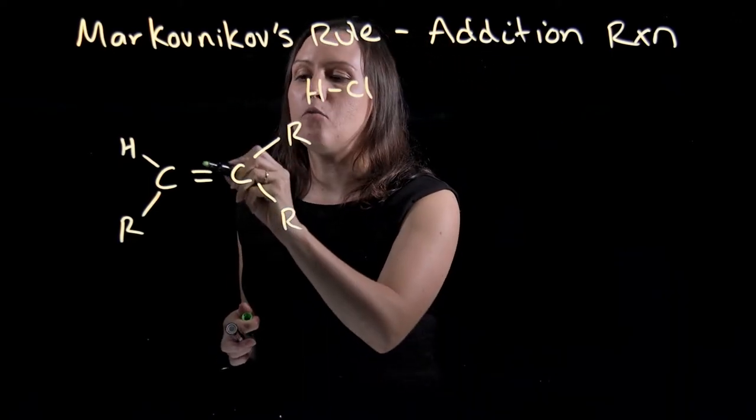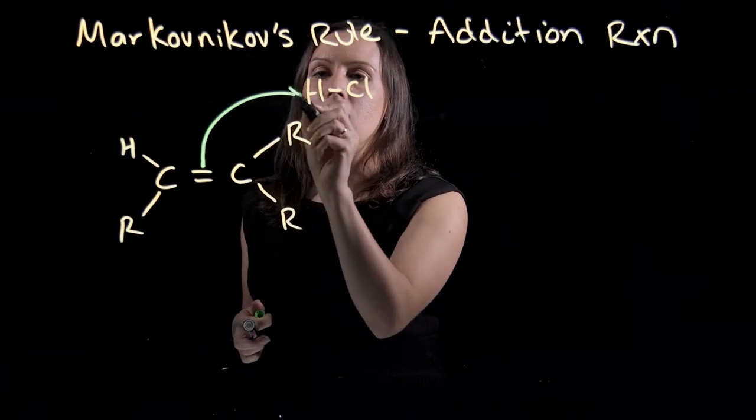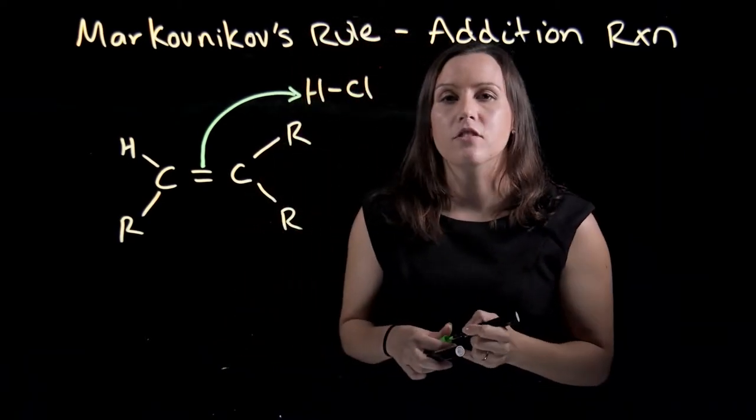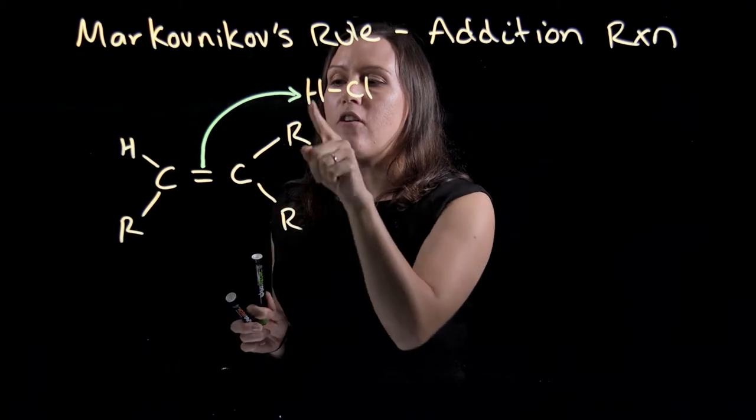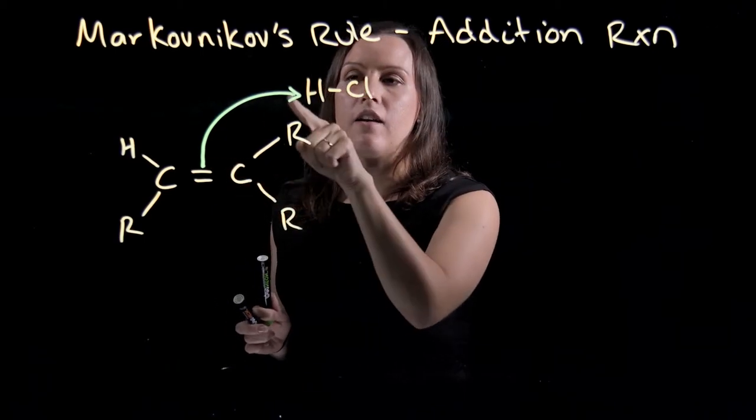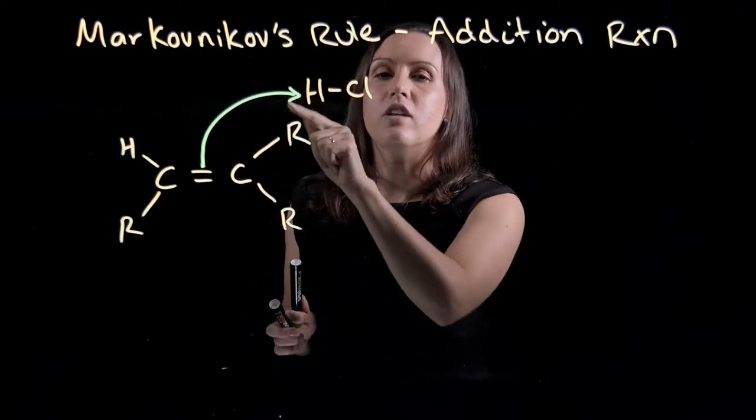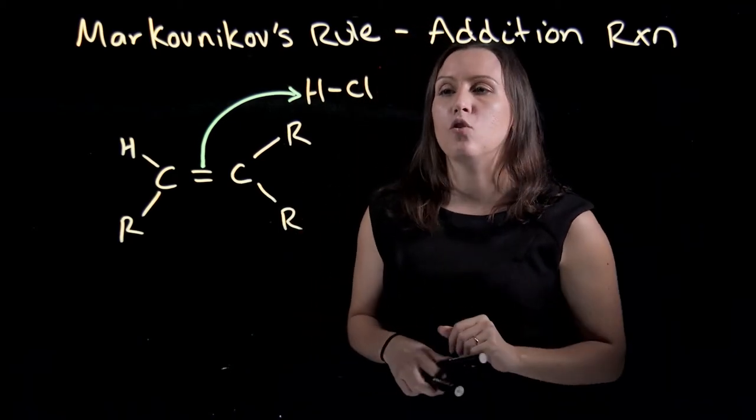When we're drawing our arrow, we'll be starting at the electron-rich area and going towards the hydrogen. So remember with your arrows, we've got our electrons starting here and ending there. We've got a double-headed arrow indicating that two electrons are moving.